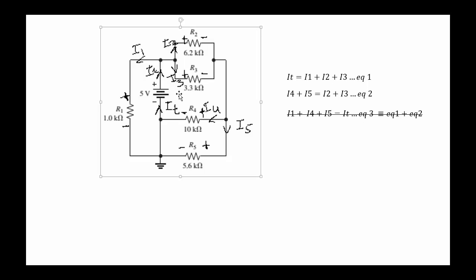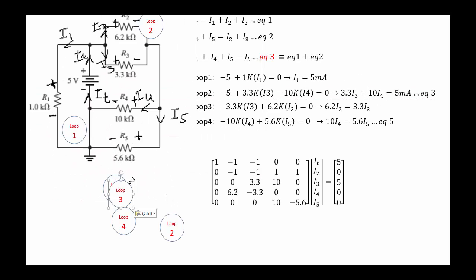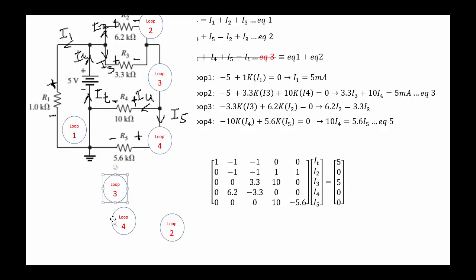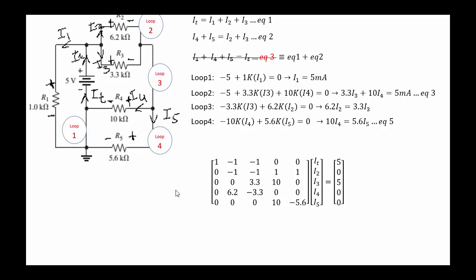We can start loop one clockwise or counterclockwise — it doesn't really matter. Starting from loop one, we have a voltage rise of minus five and a voltage drop equal to the resistance times the current through it. So from loop one: minus 5 + 1 kΩ × I1 = 0, which gives us I1 = 5 mA.